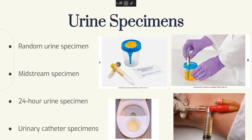There are a couple of different types of urine specimens. First is the random urine specimen, also known as a routine urine specimen. It's collected for routine urinalysis. No special measures are needed. It is not a sterile specimen. It can be collected from the bedpan, the urinal, or the hat.